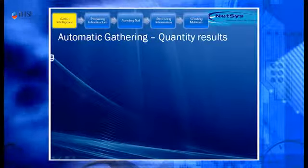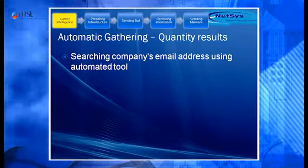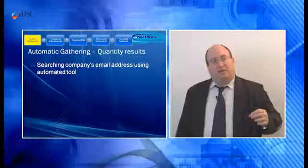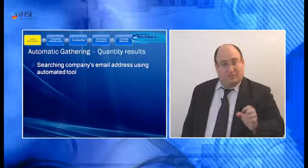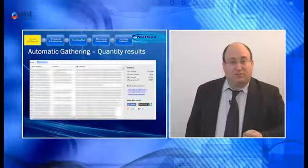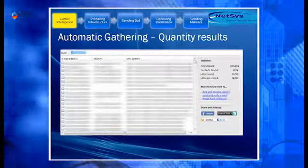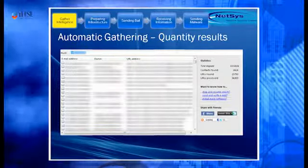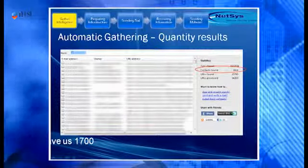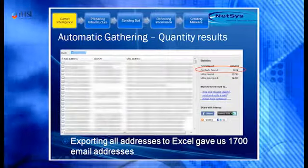We can also do automatic gathering, which takes a different perspective — quantity rather than quality. This is done using an automatic crawler tool that is free on the internet. I entered the at-symbol and the name of the company and ran the search. As you can see here, after letting this program run for a couple of hours, I obtained over 1,600 email addresses of employees in this company. Combined with the manually gathered ones, we now have 1,700 email addresses, which can be exported to Excel for later use.